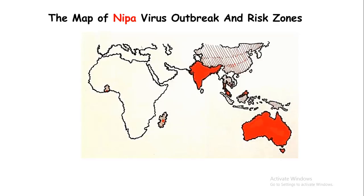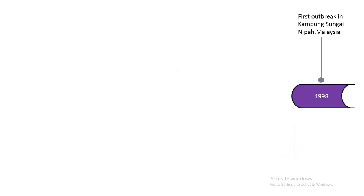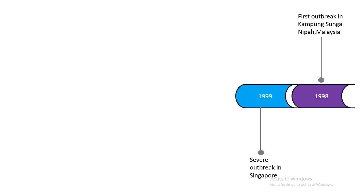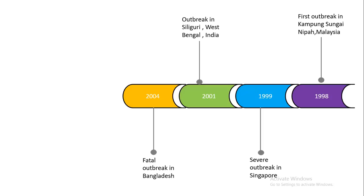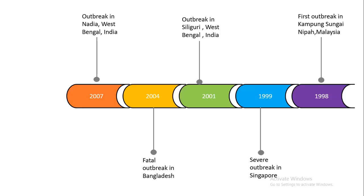Is it the first time Nipah has broken out in India? The answer is no. Nipah virus was first found in Malaysia and the outbreak happened in 1998 in Kampung Sungai Nipah. After that, in 1999, there was a severe outbreak in Singapore. In 2001, there was a Nipah outbreak in Siliguri, West Bengal, and several people died in the 2004 outbreak in Bangladesh. Nipah virus reoccurred in West Bengal in Nadia district in 2007, and after that the evidence of Nipah outbreak is from Kerala, India.